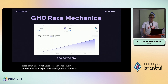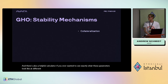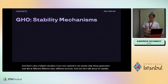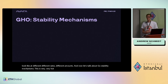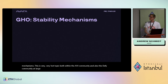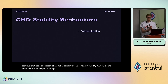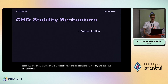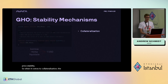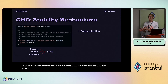Now let's talk about GHO stability mechanisms — a very hot topic both within the Aave community and the DeFi community at large. There are two aspects: collateralization stability and price stability. On collateralization, the Aave protocol takes a firm stance: within the protocol, the GHO price is fixed at one USD.